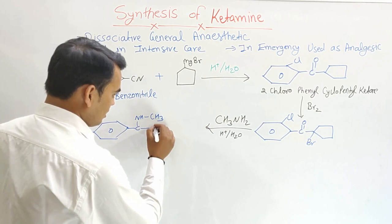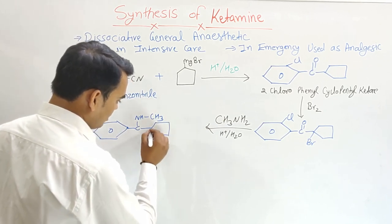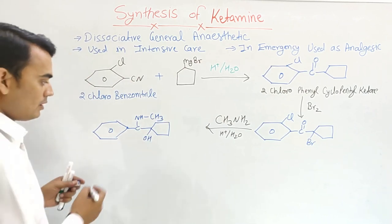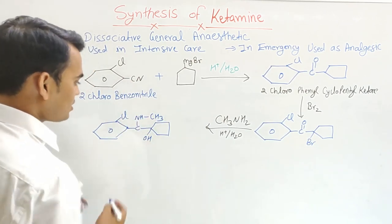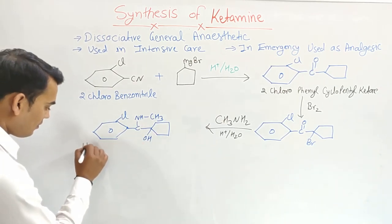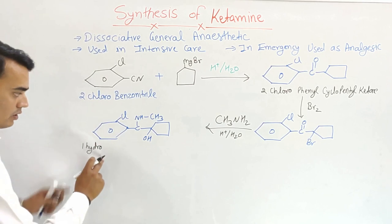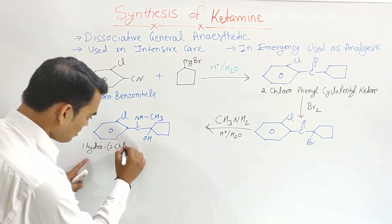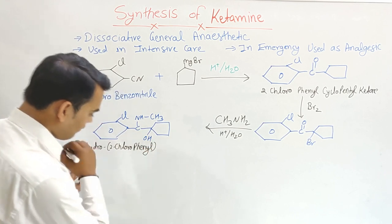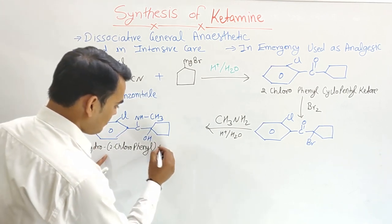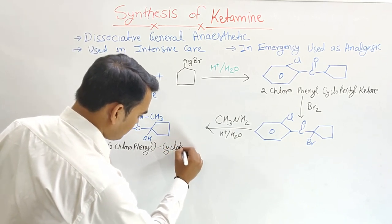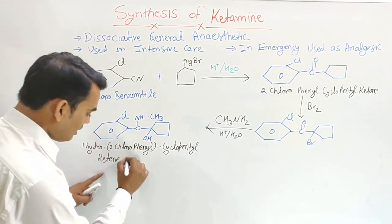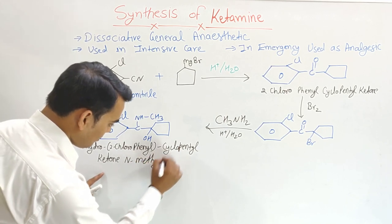The cyclopentyl ring's bromine is also converted into a hydroxyl group, giving a chlorine on the phenyl ring. This intermediate is named 1-hydroxy-2-chlorophenyl cyclopentyl ketone N-methyl.